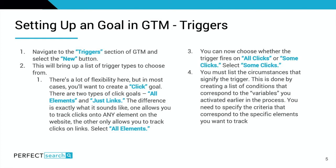Now that variables are set up, navigate to the triggers section of GTM and select the new button. This will bring up a list of different trigger types to choose from. In most cases, you'll want to create a click goal. When doing so, there are two options: click all elements or click just links. The difference is exactly what it sounds like — one allows you to track clicks on any element on the entire website, while the other only tracks clicks on links. We recommend you click all elements.